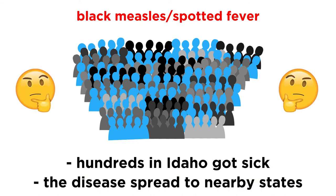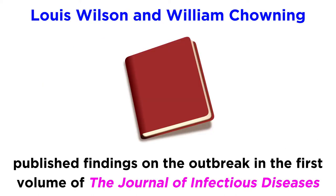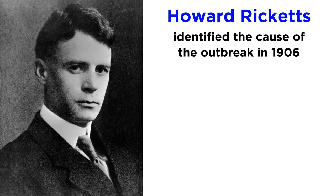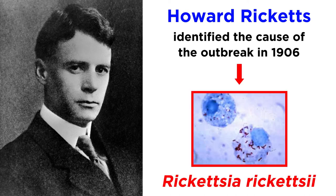Two scientists named Lewis Wilson and William Chowning investigated the outbreak and published their findings on this spotted fever in the very first volume of The Journal of Infectious Diseases. A few years later in 1906, a pathologist named Howard Ricketts identified the cause of the outbreak, a newly discovered bacterium that was later named after him, Rickettsia rickettsii.